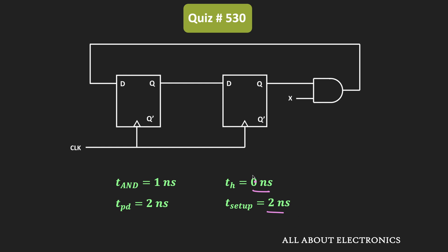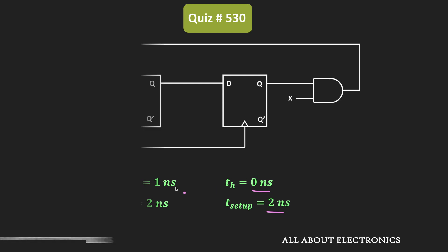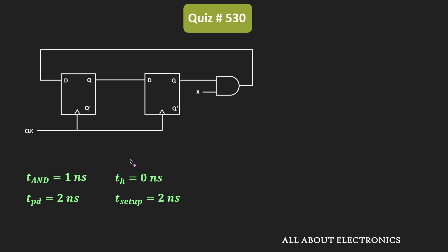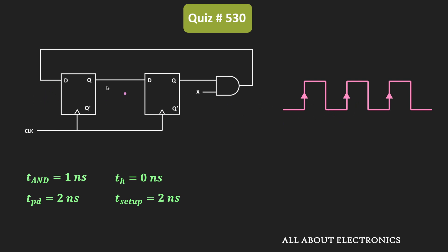Based on these parameters, we need to find the maximum clock frequency such that there is no setup time violation. The minimum clock duration must be such that each flip-flop in the circuit has a valid new input before the arrival of the new clock edge, without causing a setup time violation.